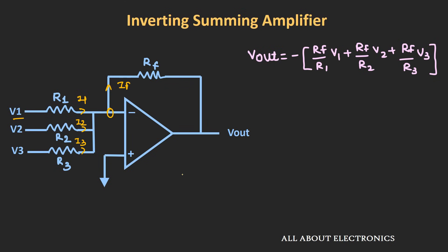When considering one voltage source at a time, the remaining sources act as short circuits. For example, if V1 is acting alone, V2 and V3 are shorted to ground. Because of virtual ground, node X is also at ground, so R2 and R3 effectively don't exist in the circuit. The effective impedance seen by V1 is simply R1 — there is no interference between voltage sources. This is the biggest advantage of the inverting summing amplifier.